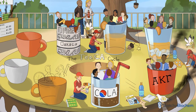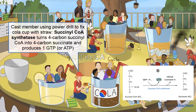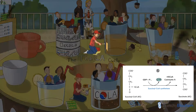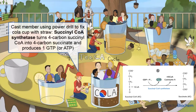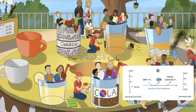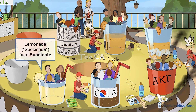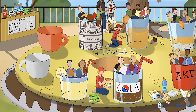You'll see another cast member using a power drill to fix the cola cup. This person is succinyl-CoA synthetase. Remember, citrate synthase used a screwdriver — synthase enzymes don't require or produce energy in the form of ATP or GTP, while synthetase enzymes do. That's why the succinyl-CoA synthetase cast member uses a power drill. In step 5, succinyl-CoA synthetase transforms 4-carbon succinyl-CoA to 4-carbon succinate, producing one GTP or ATP — represented by a triplicate of green G-brand phosphate batteries. Our next group of four riders are sitting in lemonade, or succinate — it's like lemonade, but it sucks a lot more.